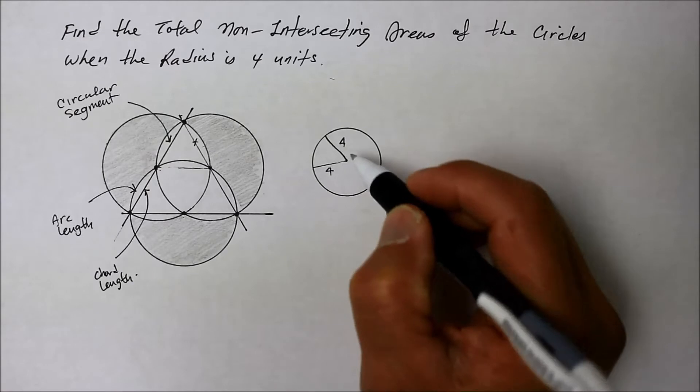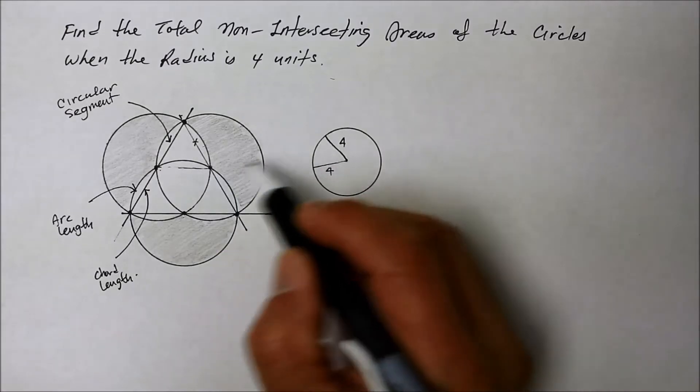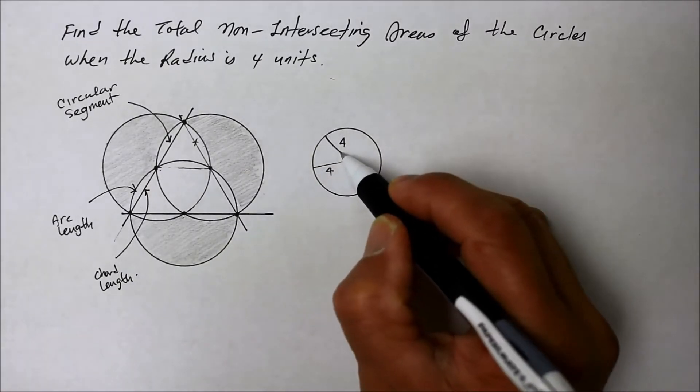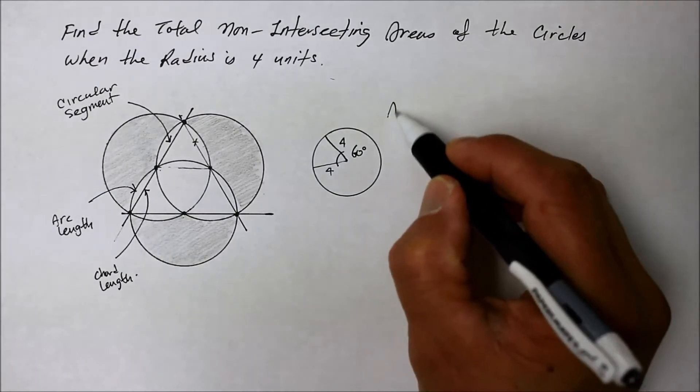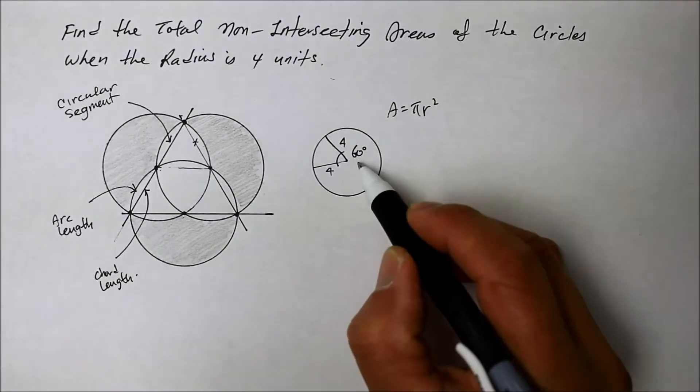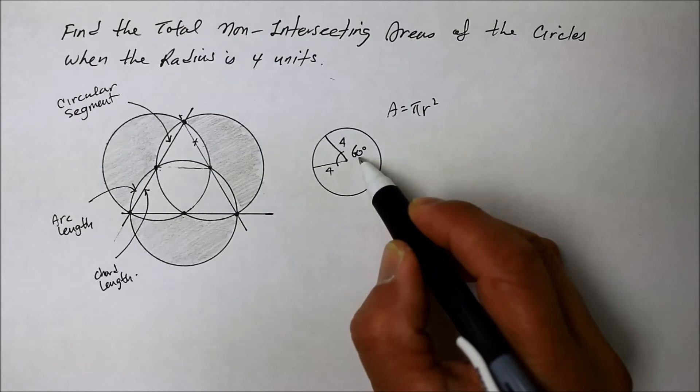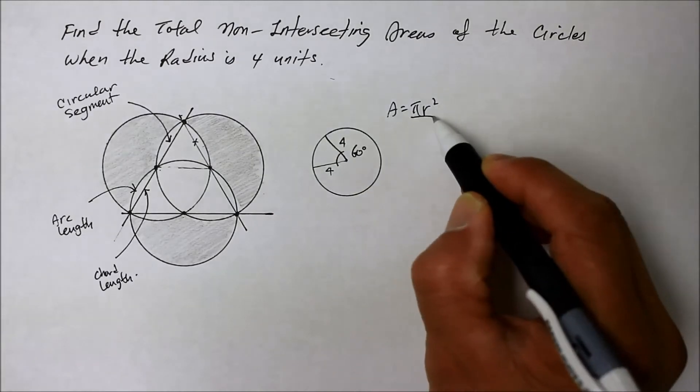So how do you find that? Well, it is coming from an equilateral triangle, remember? And that is 60 degrees. And the area of a circle is pi r squared. But 60 degrees is only one-sixth of the entire 360. So we're going to divide it by 6.